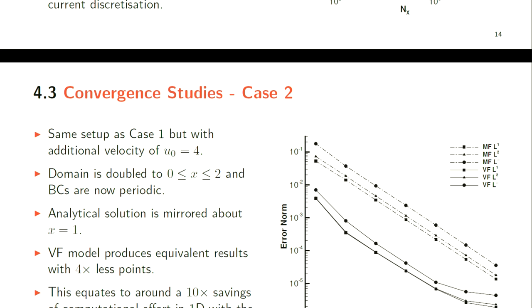The second test case is the same as the first but with an additional velocity. We also double the domain and make the boundary conditions periodic so the interface advects to the right and then back again to where it started. The analytical solution is the same as before, just mirrored about the middle of the domain so we're affecting two interfaces. This test case gives us a really nice example of why we set out to derive these new equations. For cases where the interface is advected at a suitable velocity through the mesh, the mass fraction approach will generate fairly large errors. We're getting equivalent results for around four times less number of points using the volume fraction model. Given that the new equations are about one and a half times more computationally expensive to solve, this equates to roughly a 10 times saving in computational effort just in 1D.